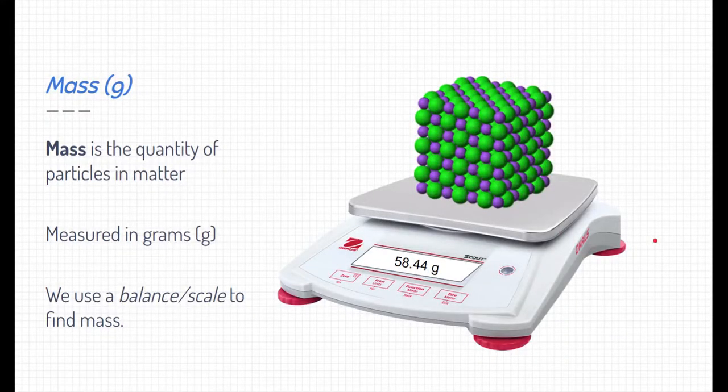What is mass? Mass is the quantity of particles in matter, the number of individual particles inside matter. Mass is measured in grams, and that's important. Remember that mass is the thing that we are measuring, and grams is the unit it is measured by.